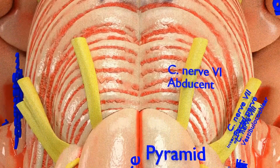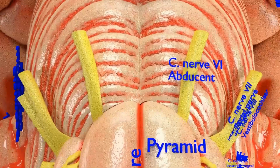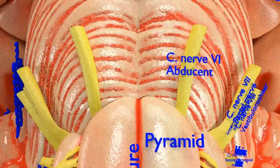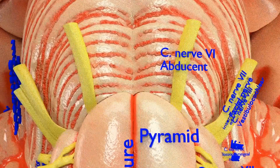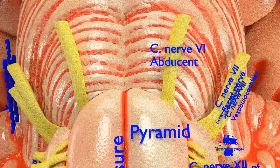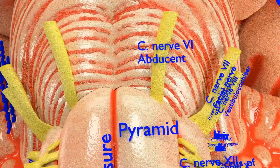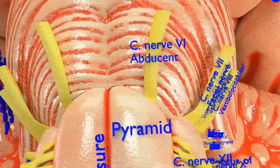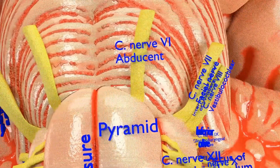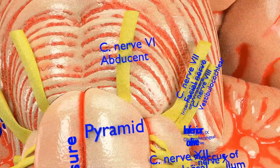You can see the different cranial nerves emerging from the pontine-medullary junction: cranial nerve 6, the abducens nerve; cranial nerve 7, the facial nerve; and cranial nerve 8, the vestibulocochlear nerve.